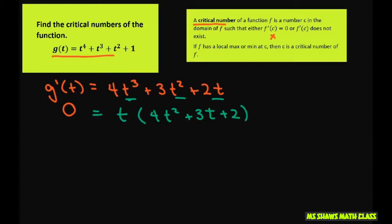You set each of these pieces to zero, so we have t equals zero. We also have 4t squared plus 3t plus 2 equals zero. Now I can't factor this, so I have to use the quadratic formula. So I have a equals 4, b equals 3, and c equals 2.